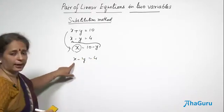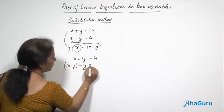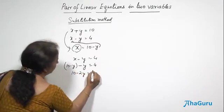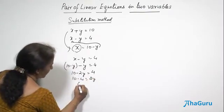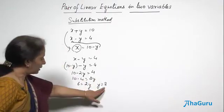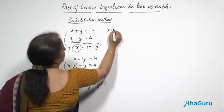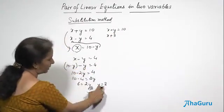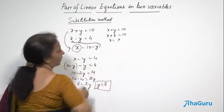Substituting, instead of x we write 10 minus y, so we get: 10 minus y minus y equals 4, which gives 10 minus 2y equals 4. That means 10 minus 4 equals 2y, so 6 equals 2y, giving y equals 3. Now substituting y equals 3 into x plus y equals 10, we get x plus 3 equals 10, so x equals 7.